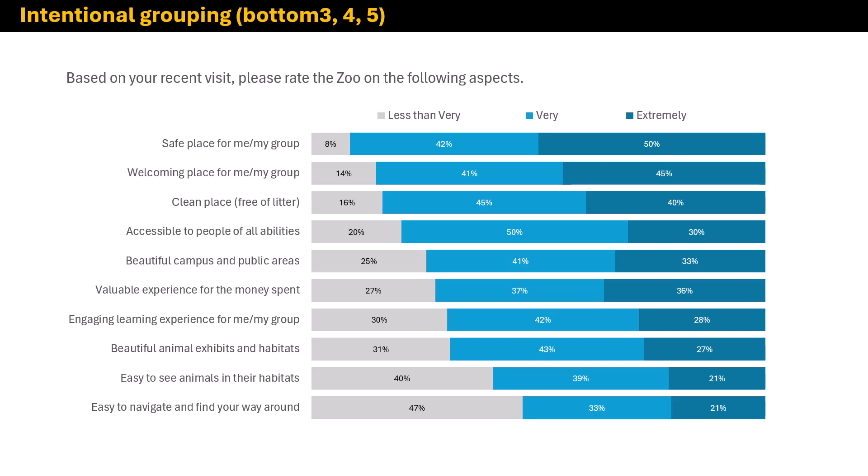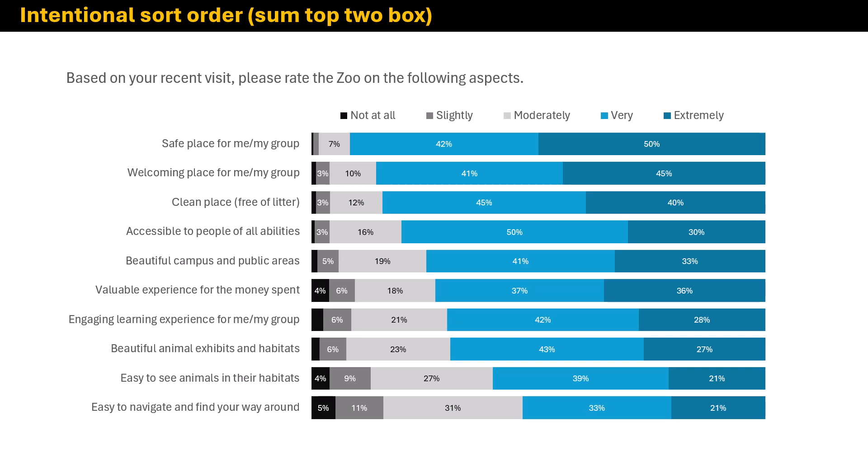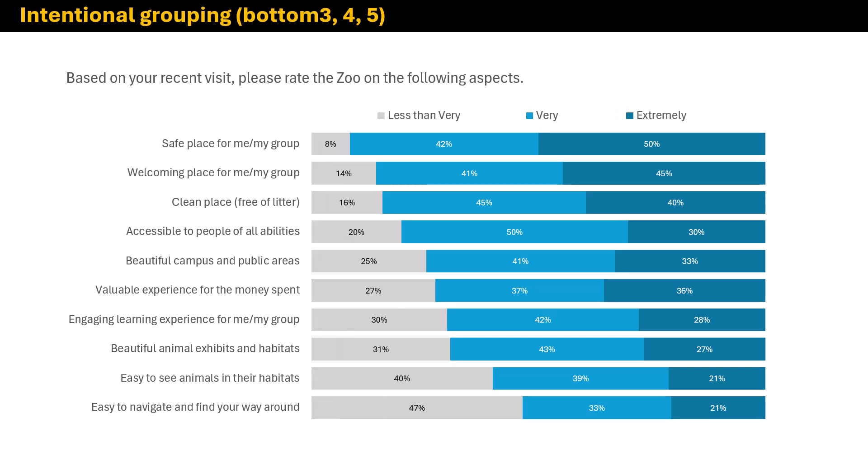The next thing I'm going to do is some intentional grouping. Maybe I don't need not at all and slightly to be really pulled out, since they're such small percentages anyway. So I could group those into a less-than-very category — the bottom three box — and then have very and extremely separate. I think that looks really nice and is a little bit easier for the eye to discern.